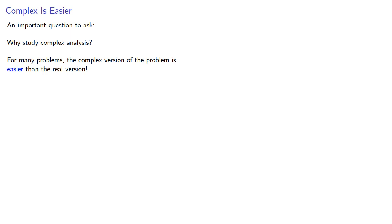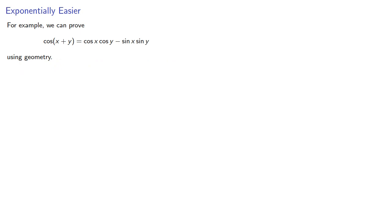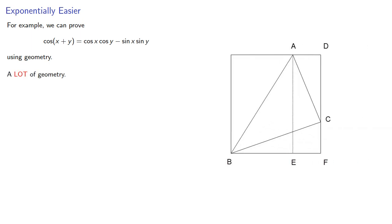We'll illustrate this with trigonometric identities. For example, we can prove that cosine of x plus y is cosine x cosine y minus sine x sine y using geometry. A lot of geometry, provided x and y are real angles and their sum is between 0 and pi halves. But what if they're not?